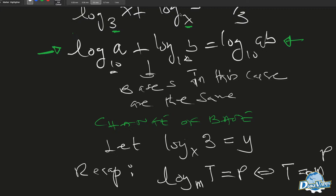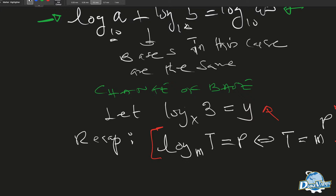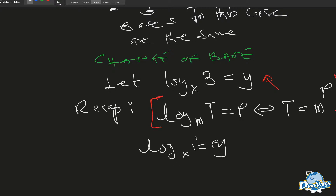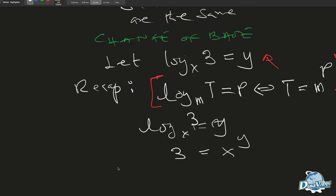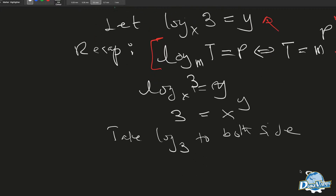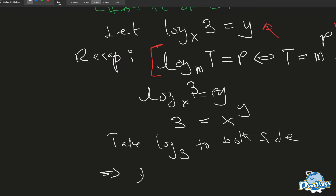So this property of logarithm we have always had. If we apply this, then we can say that log base x of 3 equals y, which means 3 equals x raised to the power of y. So then we take log base 3 of both sides. Our equation now becomes log base 3 of 3 and log base 3 of x to the y.